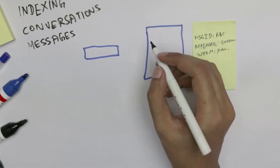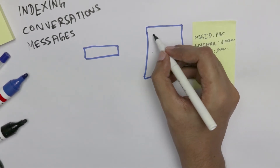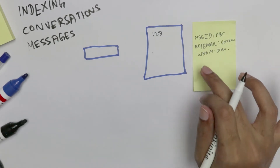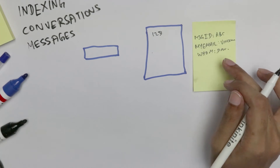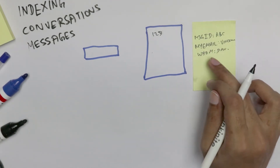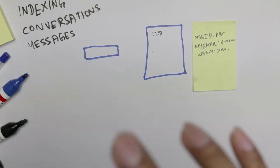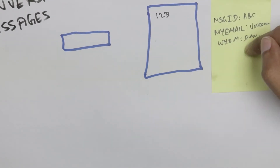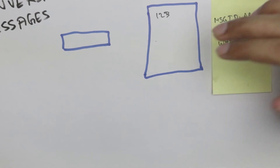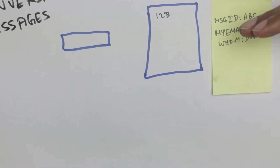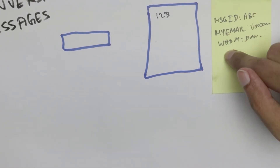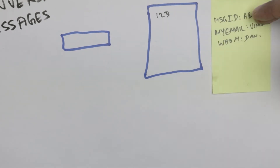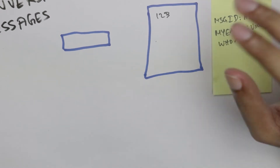So if I am Wins chatting with Daniel, my email wins@gmail.com is in the my_email field, dan@gmail.com is in the whom field, and there is a random message ID, say ABC. A mirrored copy of this document also exists where Dan's email is under my_email and my email is under whom, but the message_id is the same for both — since we are both part of the same conversation.